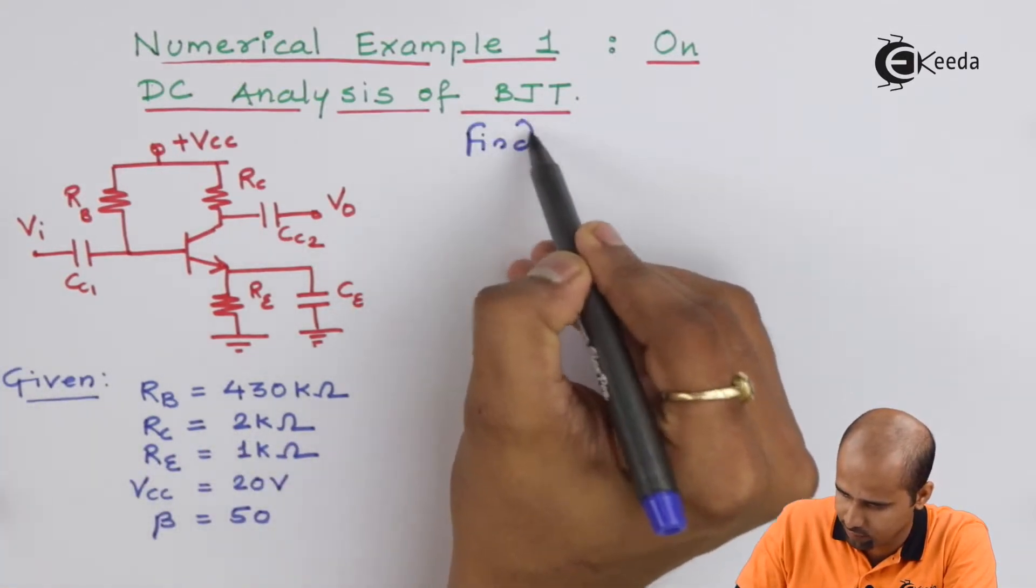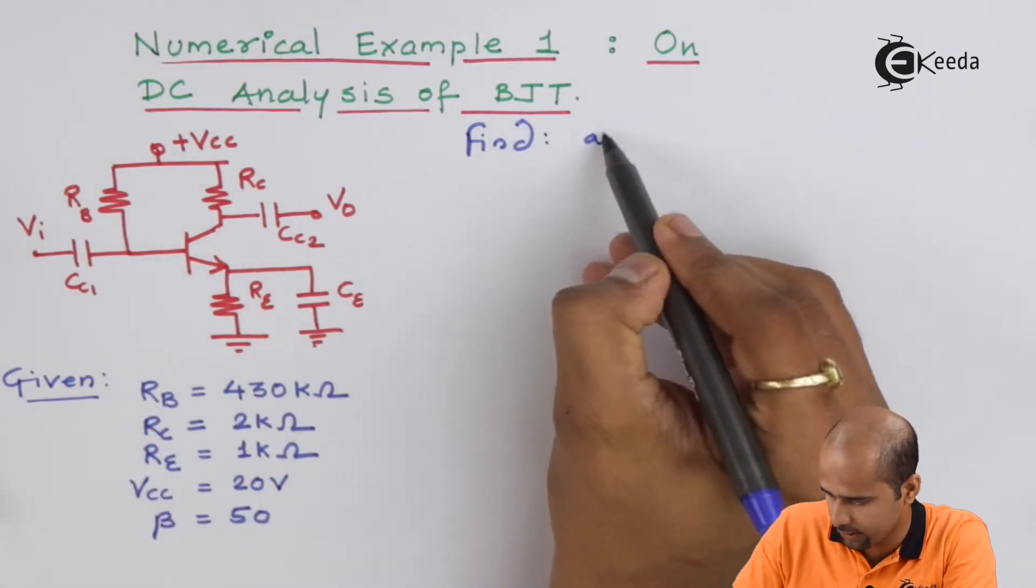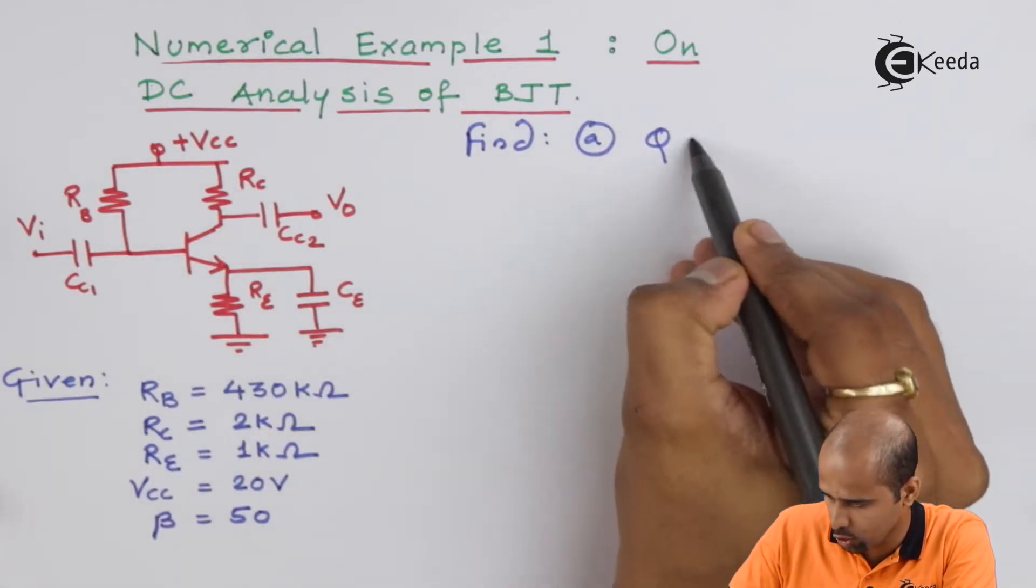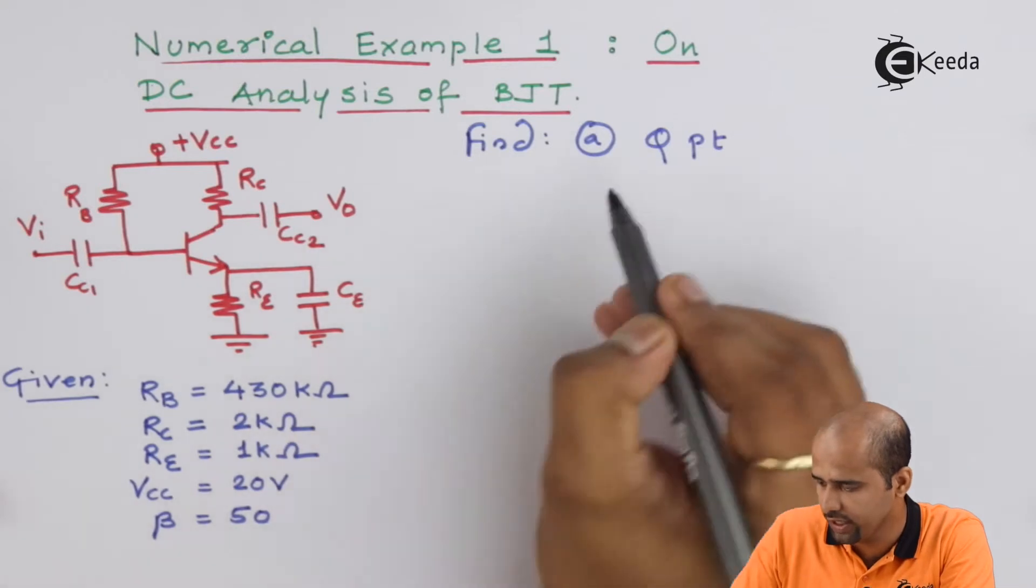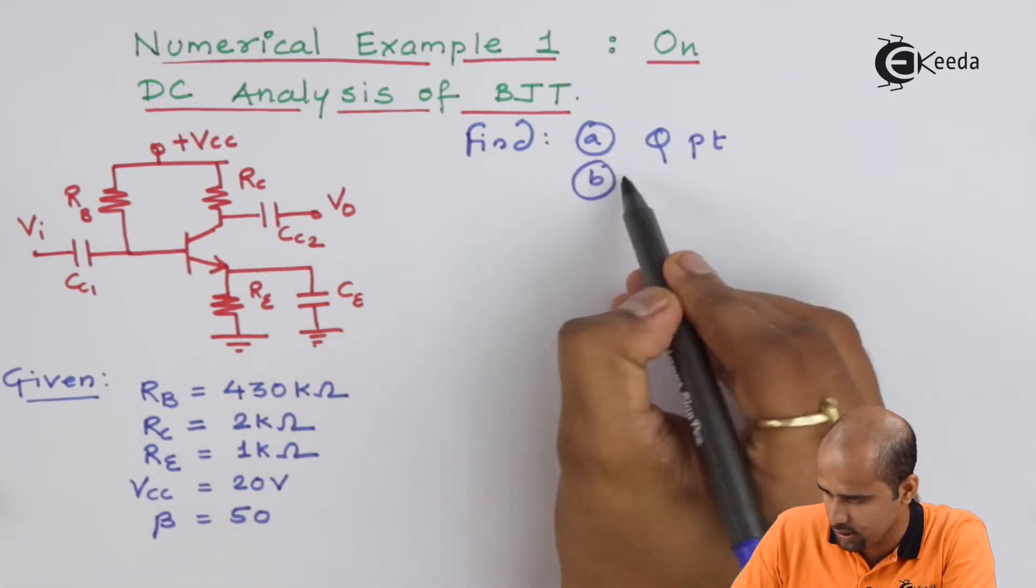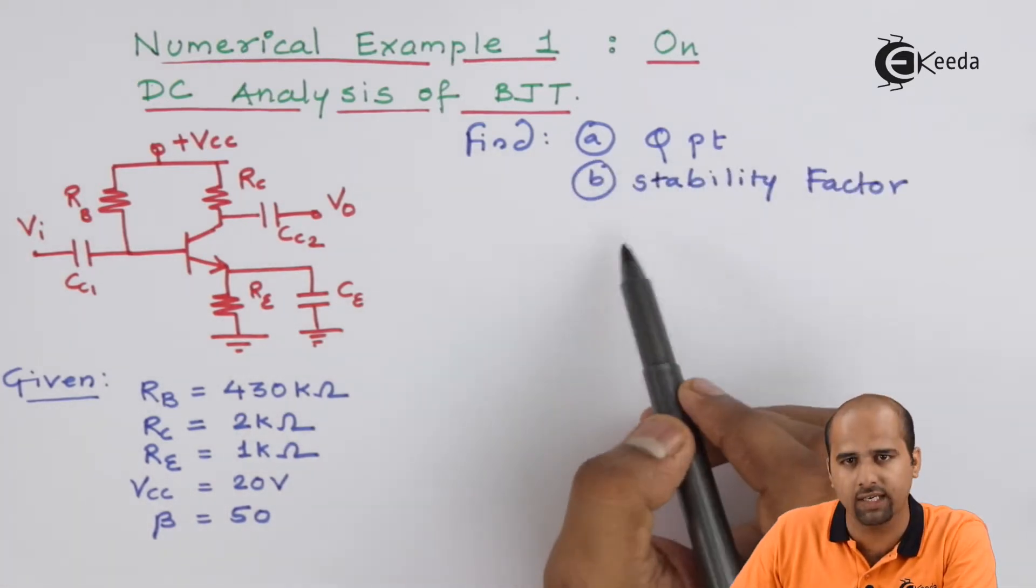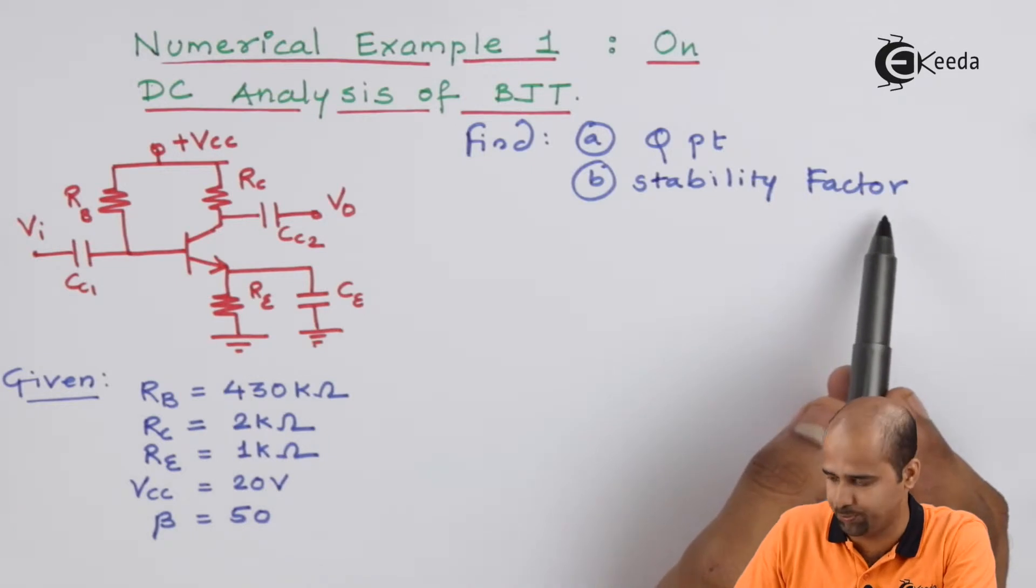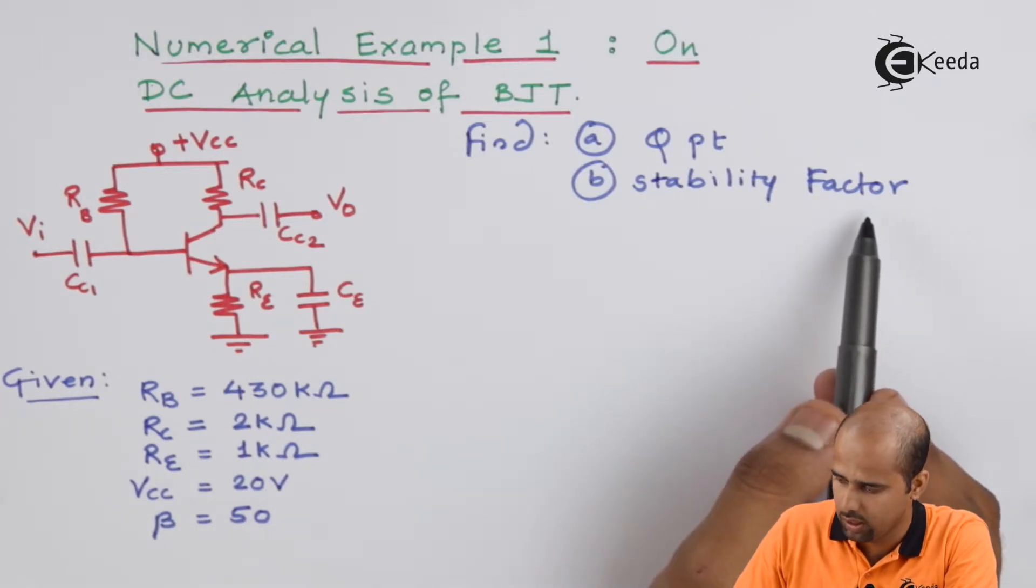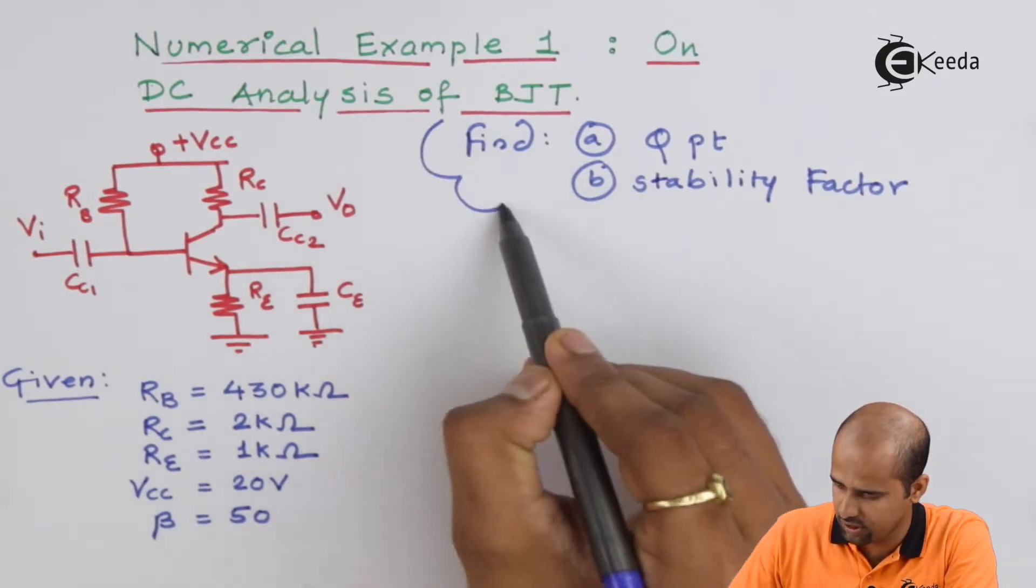Find A part, Q point. B part, Q point and stability factor. So these are nothing but the question.